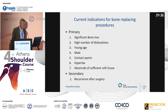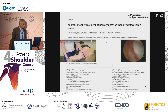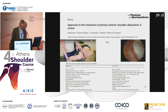In secondary cases — recurrence after surgery or revision cases — it is generally accepted that in many cases you should do something more than just a soft tissue procedure. This review article has listed the approach to treatment of primary anterior shoulder dislocations, with certain risk factors defined — I will not go into that as it has already been mentioned by many others.